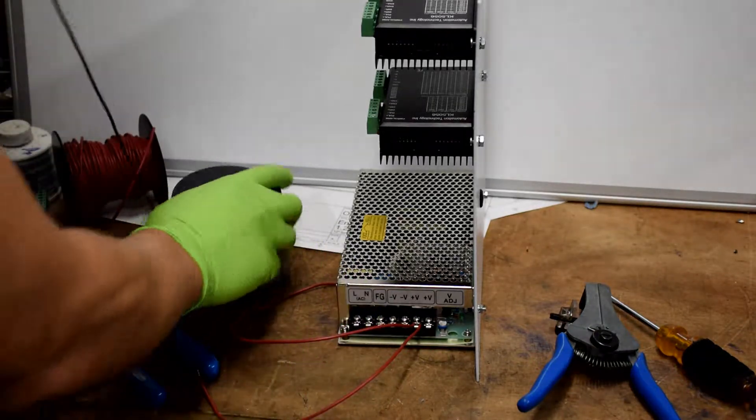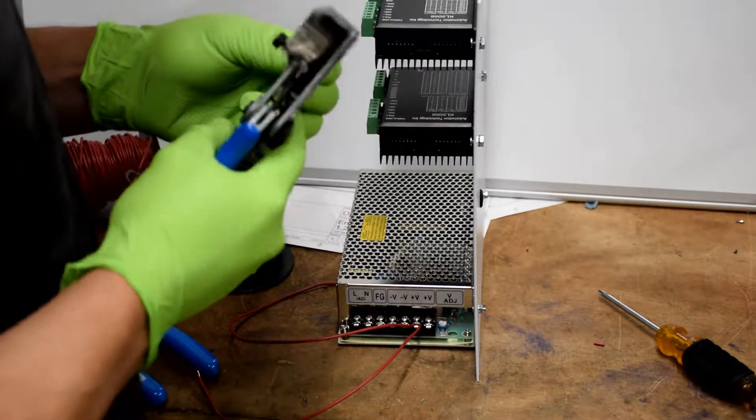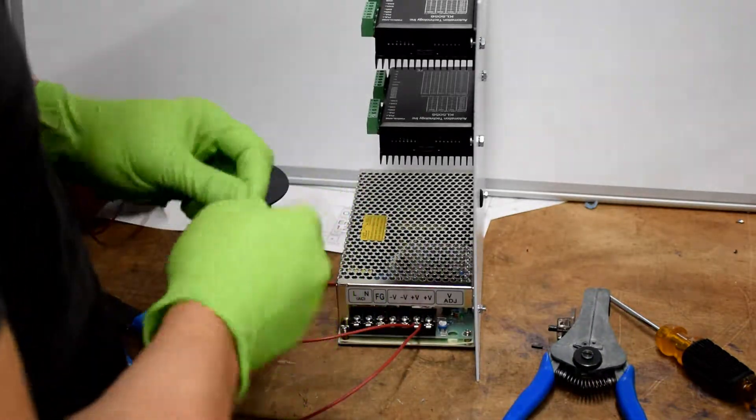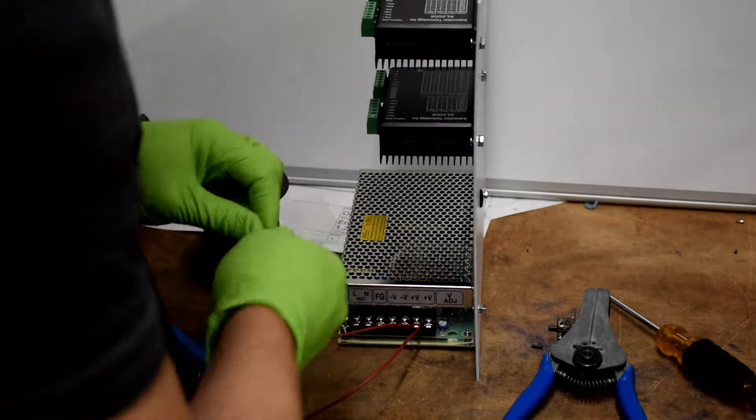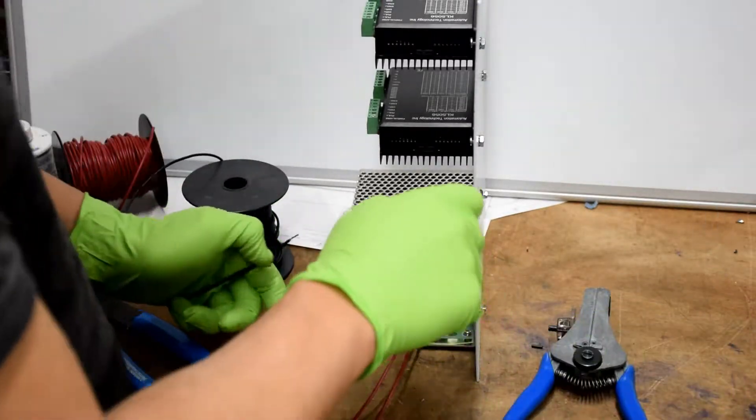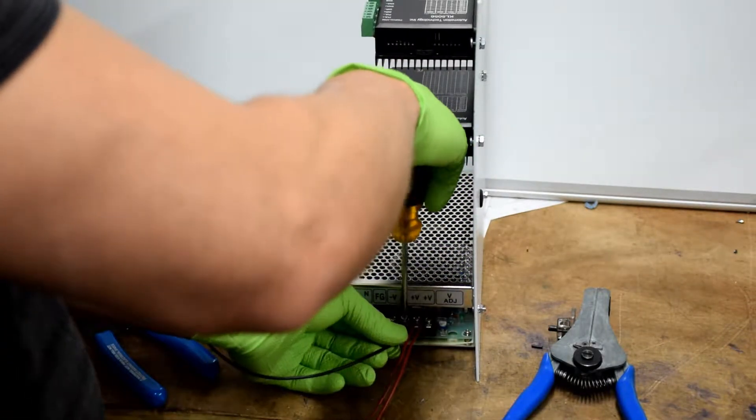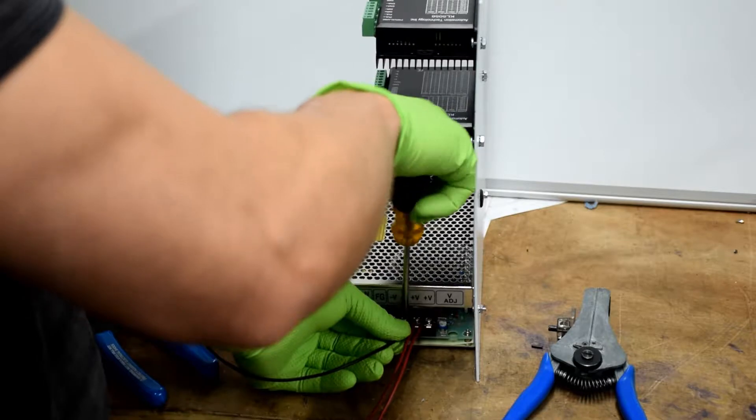You're going to repeat this step with the black or negative wire, inserting them into the negative terminals on the power supply. Make sure you leave a little slack in the wires when you're cutting to length. You may have to move them around a little bit once you start getting a bunch of wires in there, so it's good to have a little play.